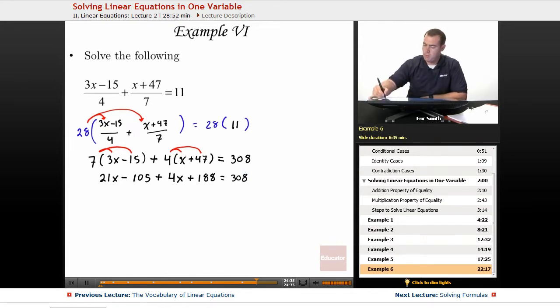Okay, I have more than one copy of x here, so let's get those guys together. And I also have some things that do not have an x, so let's get those together as well. 21 plus 4x would be a 25x. Minus 105 and a positive 188, I think that will give us an 83.